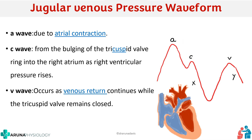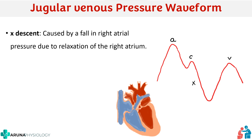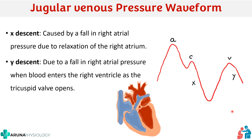Along with the positive deflections, there are also two negative deflections: the X descent and the Y descent. The X descent is caused by the fall in right atrial pressure during relaxation of the right atrium. The Y descent is due to a fall in right atrial pressure when blood enters the right ventricle as the tricuspid valve opens. So the X descent is due to atrial relaxation, and the Y descent occurs when the tricuspid valve opens.